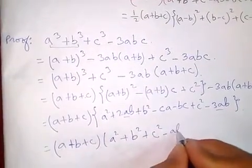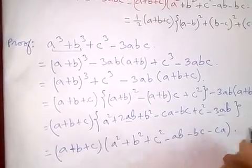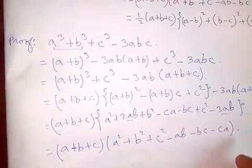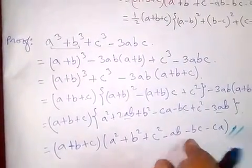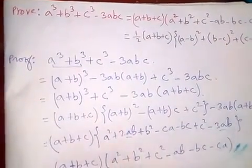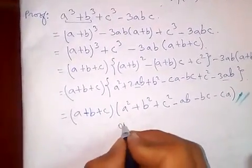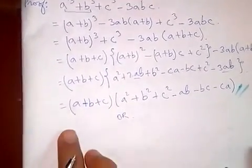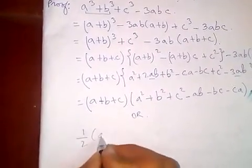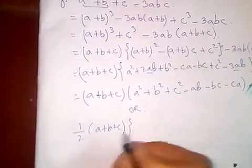Collecting terms gives a² + b² + c² - ab - bc - ca, times (a + b + c). From here, we need to show this equals half of (a + b + c) times the squared differences form, so let's take half.